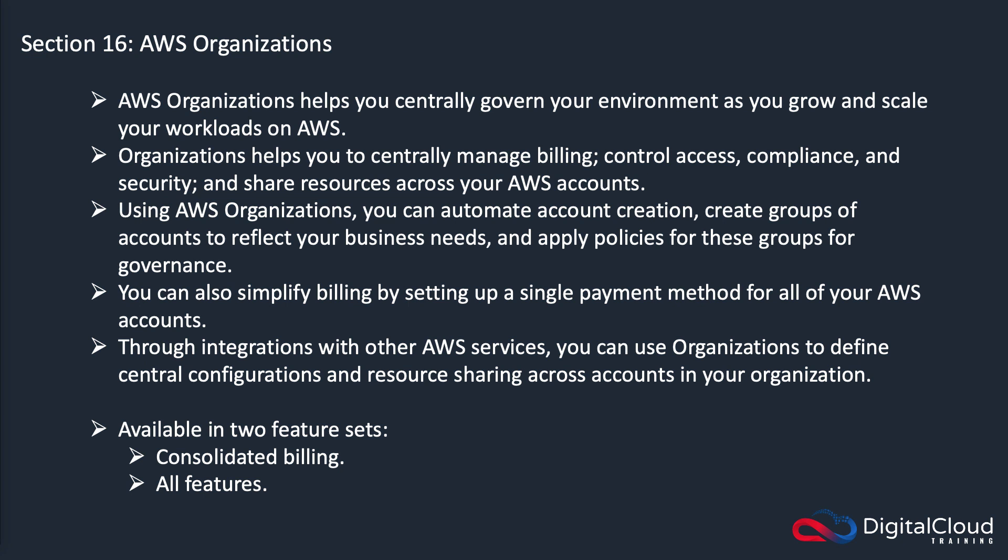There are two key feature sets: Consolidated Billing and All Features, which gives you everything else. For Consolidated Billing, there are some cost benefits. In AWS, there are discounts when you use certain amounts of a service. For instance, with S3, if you use a certain amount of storage you pay one rate, and if you use a lot more storage you pay a slightly lower rate. With Consolidated Billing, you can aggregate the usage of all your S3 storage across all your accounts, and you'll pay any discounted rates associated with that total aggregated storage volume.